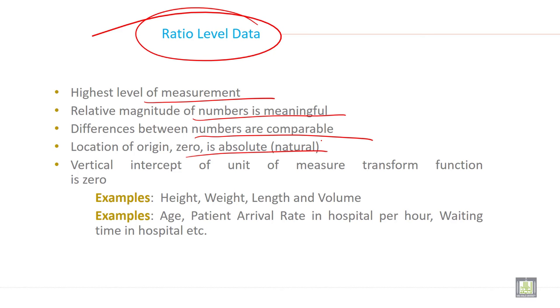Vertical intercept of unit of measurement transform function is zero. For example, height, weight, length, and volume. Another example: age, patient arrival rate in hospital per hour, or waiting time in hospital.